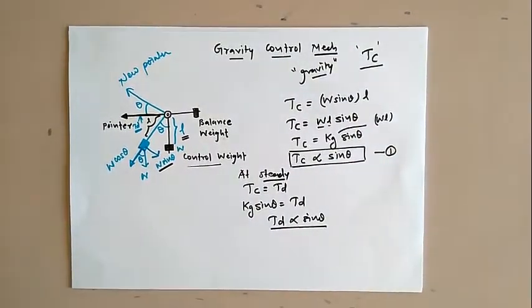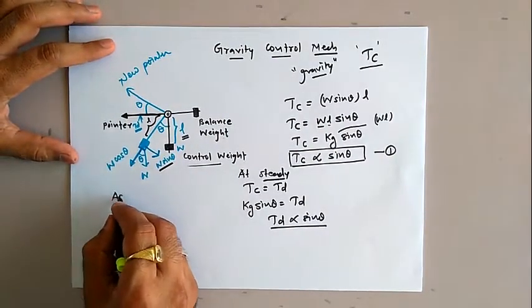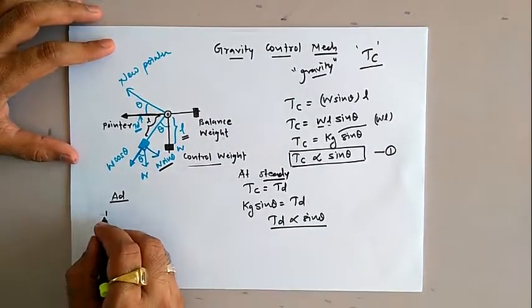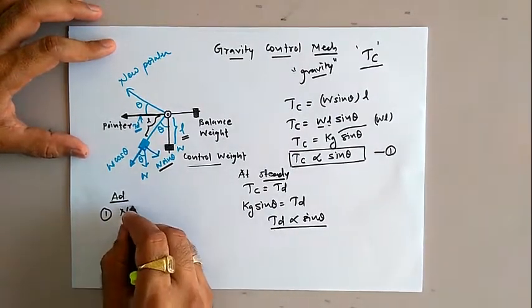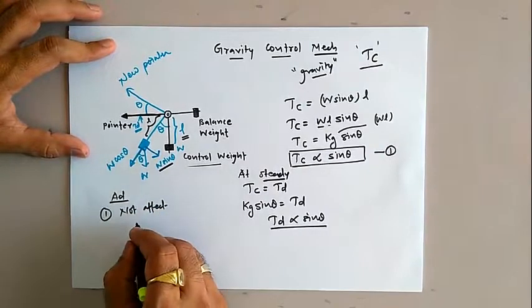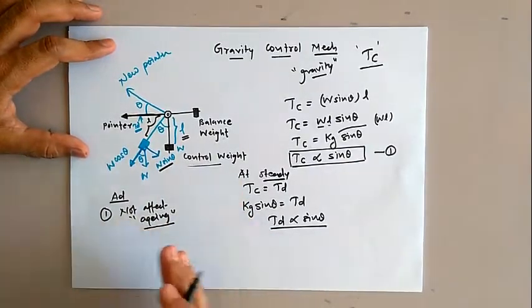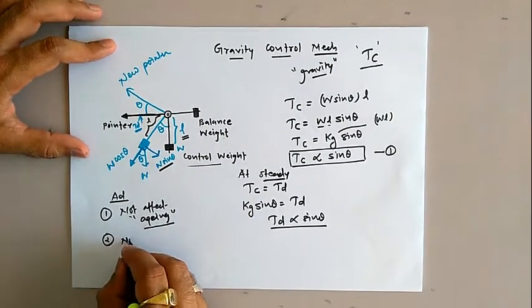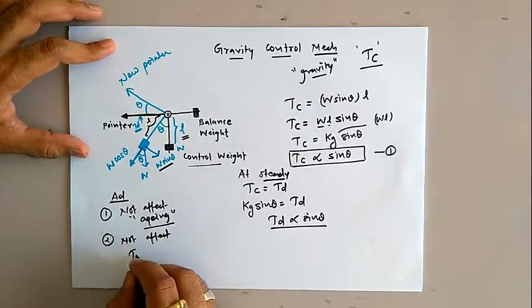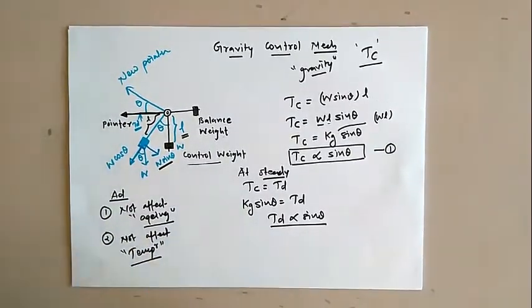Now let us analyze the advantages and disadvantages of gravity control mechanism. The first advantage is that it is not affected by any aging effect, because it works on the principle of gravity which remains constant throughout the years. The second advantage is that it is not affected by any temperature phenomena, again because it works on the principle of gravity and is unaffected by temperature.